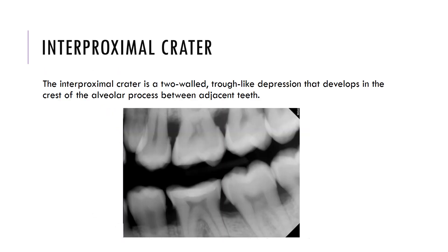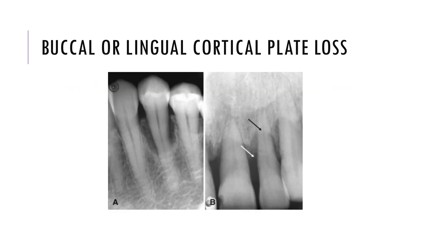An interdental crater is a two-walled trough-like depression that develops in the crest of the alveolar process between adjacent teeth, as seen here with the second molar. Buccal or lingual cortical plate loss can be difficult to assess radiographically as it is hard to determine which plate is buccal and which is lingual, and it must be complemented with intraoral examination. This difficulty is due to superimposition of the buccal and lingual cortical plates.